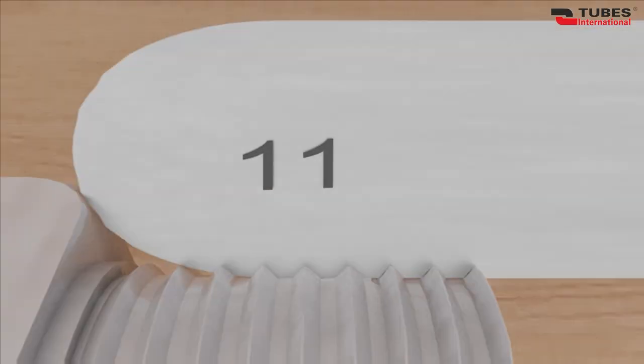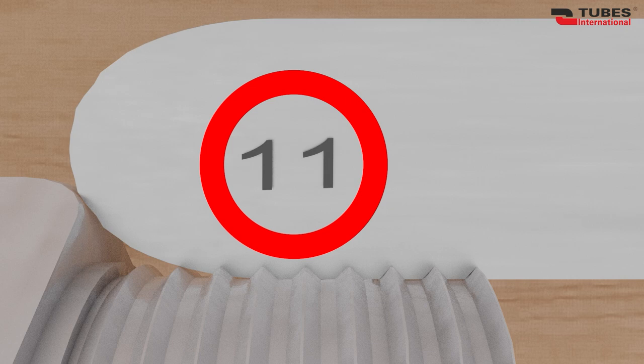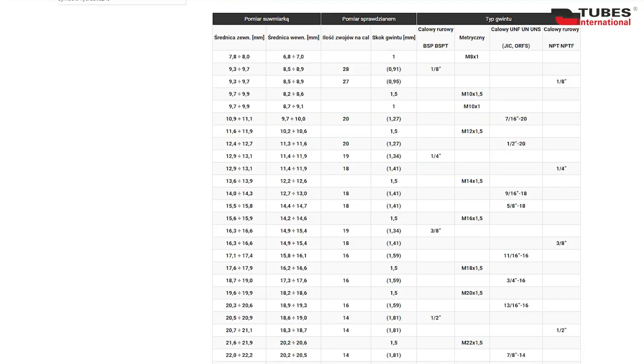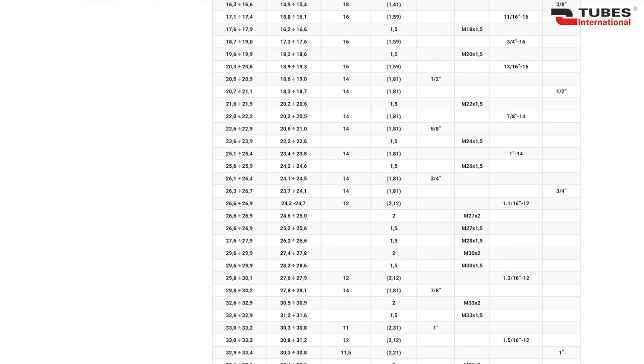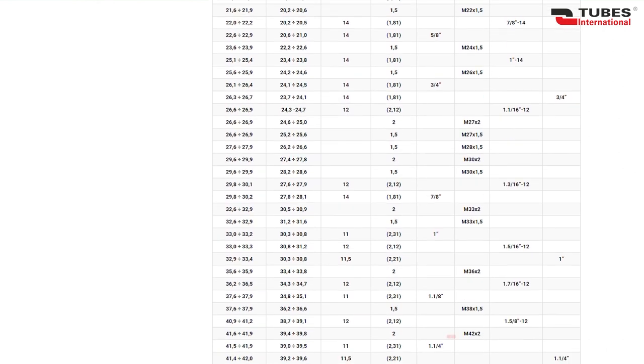Now it's time to measure the thread pitch with the gauge. Here, the gauge indicates a value of 11. Once we've found the correct gauge, let's return to the table and find the external diameter and the number of turns per inch. Based on the data from the table, we see that our thread is a 1 1/4 BSPT.